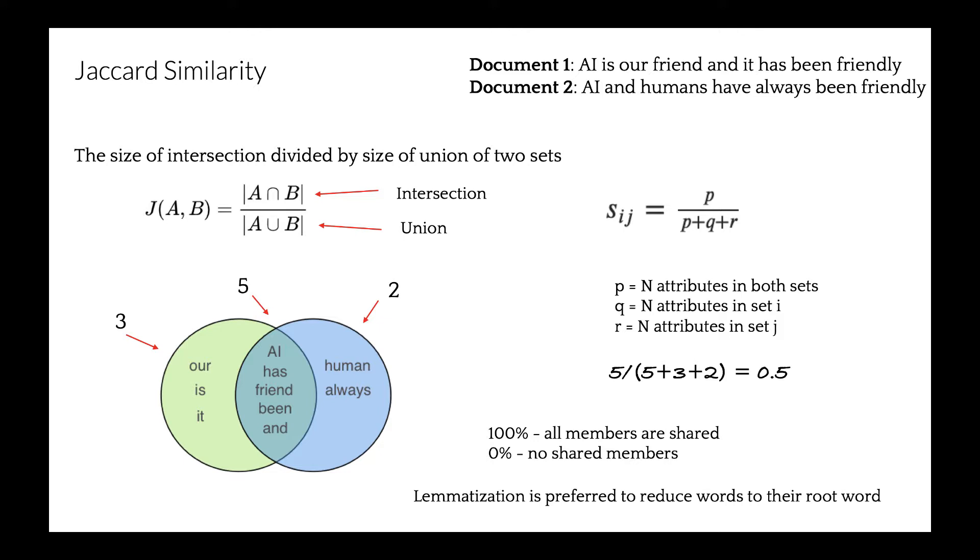You see, both documents share five words together. This is intersection. The first sentence has three words that are not shared with the second set. And the second set has two words that are not shared with the first set.